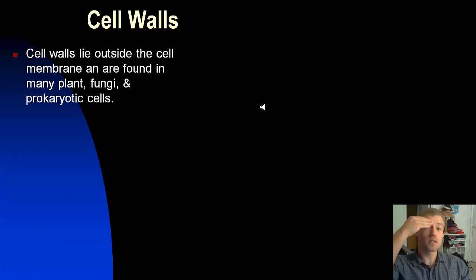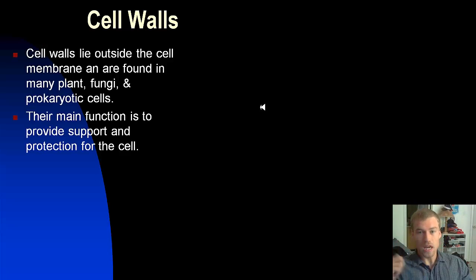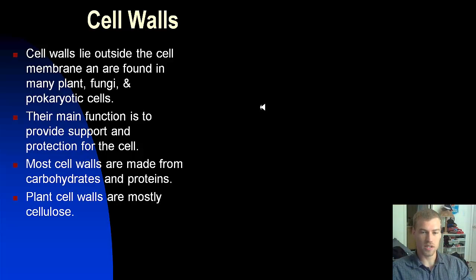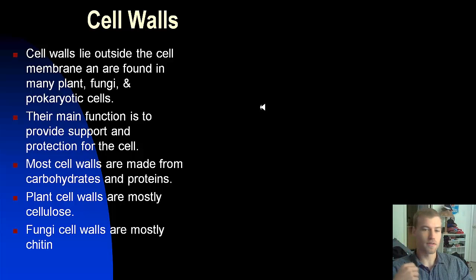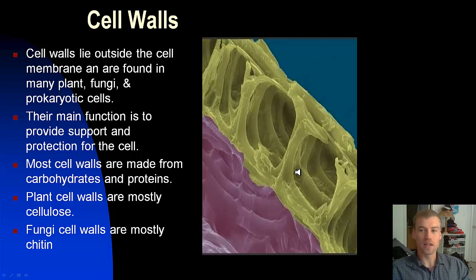Cell walls lie outside the cell membrane and are found in plant, fungal, and prokaryotic cells. Their main function is to provide support and protection. Cell walls are made from carbohydrates and proteins — plant cell walls are mostly cellulose, and fungal cell walls are mostly chitin. This is an up-close picture, using an electron scanning microscope, of what a plant cell wall made of cellulose looks like.